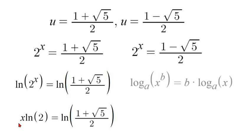Now lastly we just need to divide the left side by natural log of 2 so that we can get our x value by itself so our final answer would be x is equal to natural log of 1 plus square root of 5 over 2 which is all over natural log of 2.